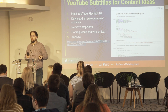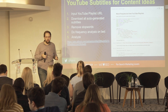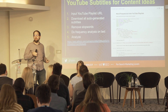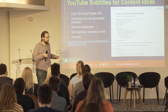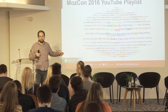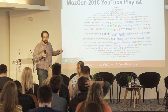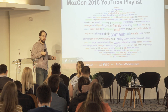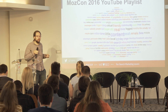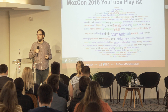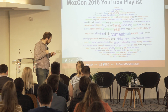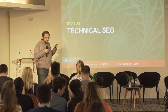I built a Python script where you input a YouTube playlist, it downloads all the auto-generated subtitles, removes stop words, and does a frequency analysis on which words are most mentioned. For instance, I pulled the entire MozCon 2016 video playlist — all the videos are free on YouTube — and ran it to see what was mentioned most. No surprise: people were talking about content. It was Moz. Also notable was how much everyone was talking about being friends and being very positive.